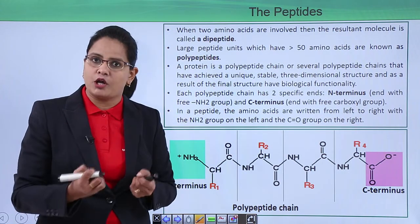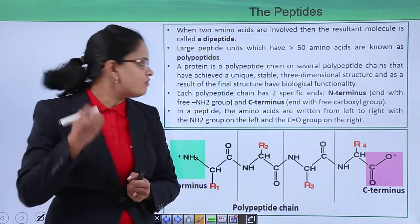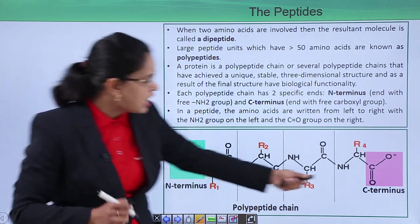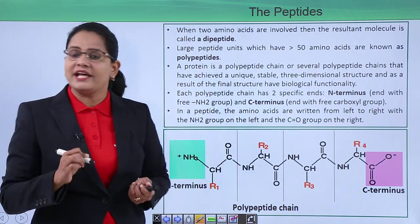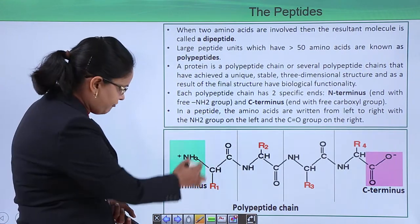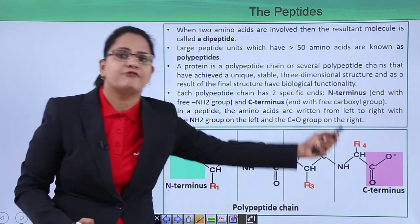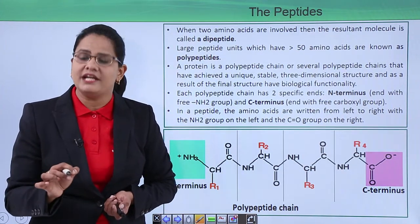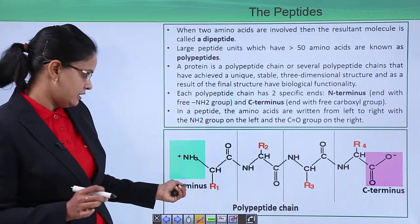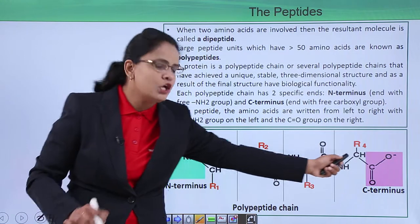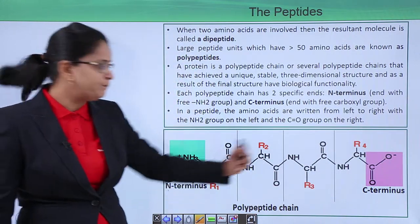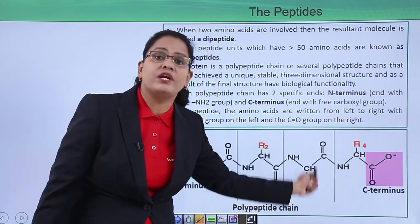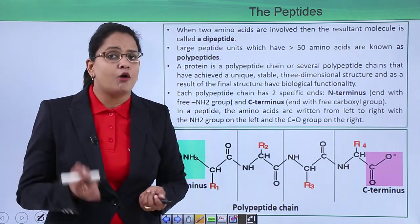Each polypeptide chain has an amino terminal (N-terminus) and a carboxyl terminal (C-terminus). The N-terminus has a free amino group and the C-terminus has a free carboxyl group. When writing the name of a peptide, we start from the left — the N-terminus — and move right toward the carboxyl end. For example, with three peptide bonds there are four amino acids.